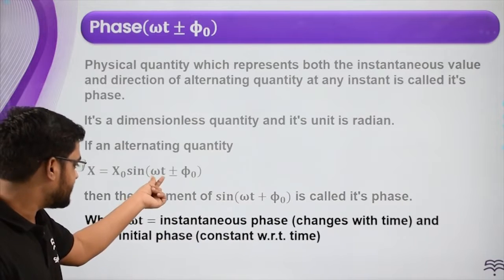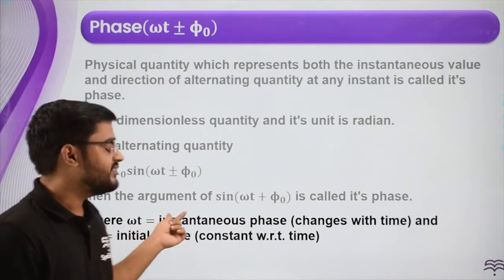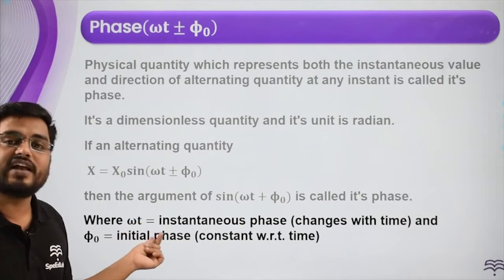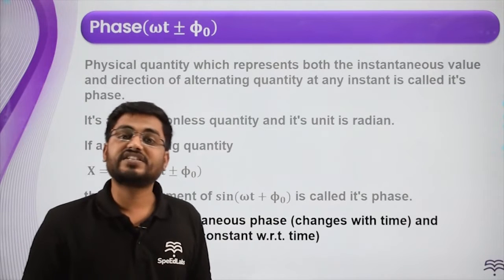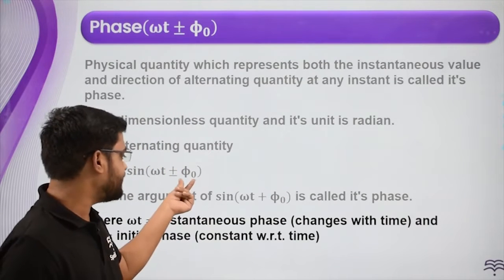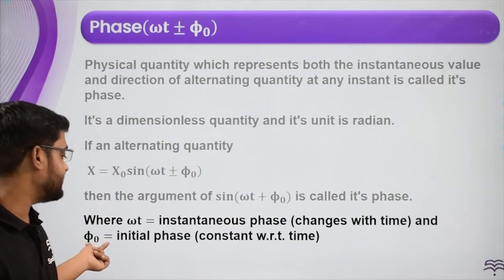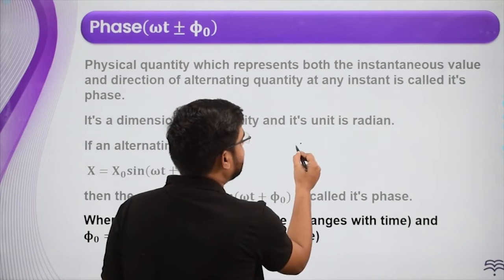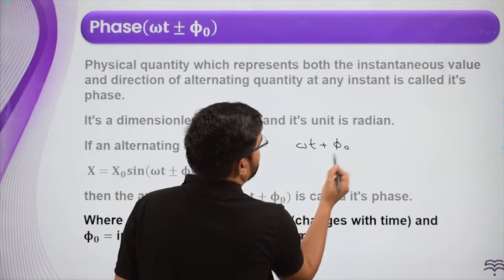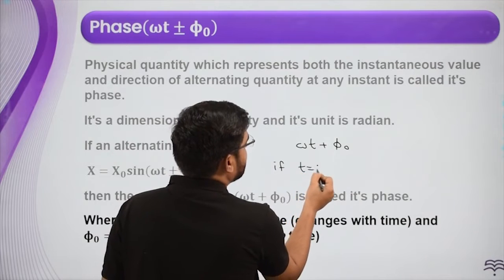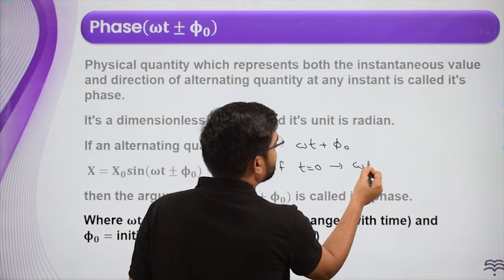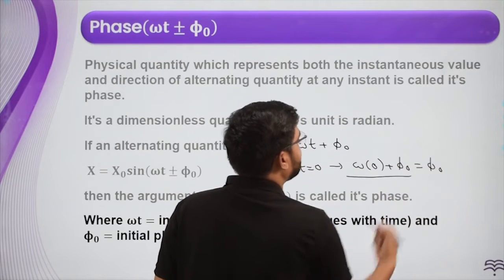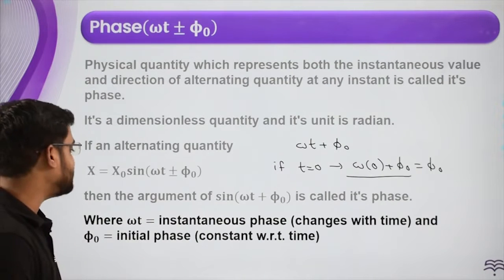The term ωt is called the instantaneous phase — time changes the value of ωt, so that is the instantaneous phase which changes with time. The term φ₀ is called the initial phase. When t = 0, the value of ωt + φ₀ becomes ω×0 + φ₀ = φ₀. So at t = 0, the value of the phase angle is called the initial phase.